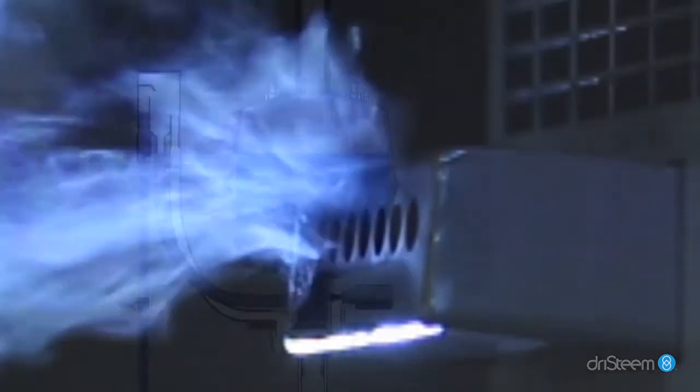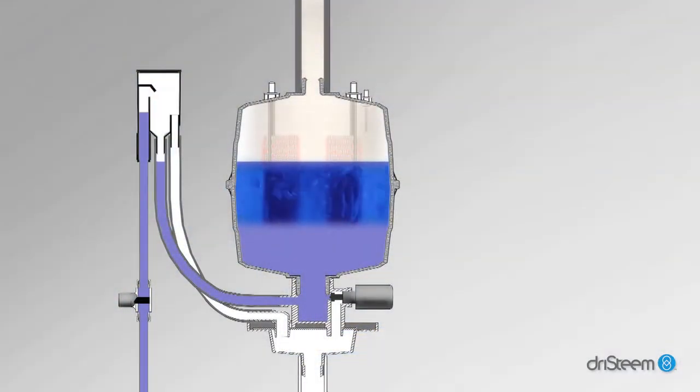As the water boils away, the amount of water covering the electrodes decreases and current flow decreases. When current flow decreases to a minimum level set by the controller, the fill valve opens to increase the water level, which increases current flow and in turn steam production.